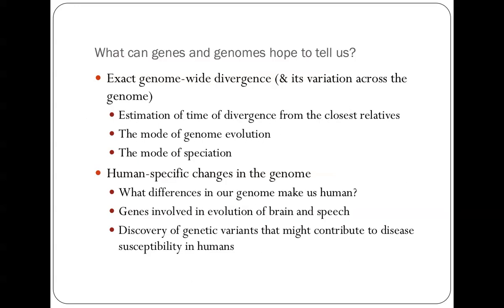So what can we hope to find out from genes and genomes? We can look at what kind of variation there is in global terms, how much of a difference there is. We can look at different places in the genome. We can estimate the time of divergence from our closest relatives. We can look at the mode of genome evolution and the mode of speciation. And more particularly, we can actually look at human-specific changes in the genome and what differences actually make us human — particularly changes in the brain that underlie changes in human behaviour, intelligence, and the power of speech and language.